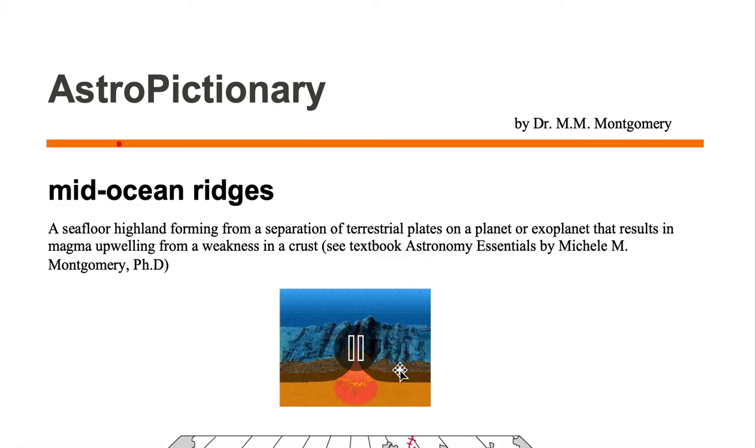Here we're looking at an animation from the USGS where we see magma upwelling from a weakness in the crust on a terrestrial planet or a terrestrial exoplanet.